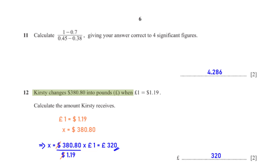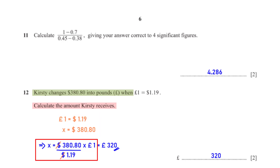Kirstie changes 380.8 dollars into pounds when one pound equals 1.19 dollars. We want to find the amount Kirstie receives in pounds, which we call x. When we cross multiply and make x the subject, we get 320 pounds.